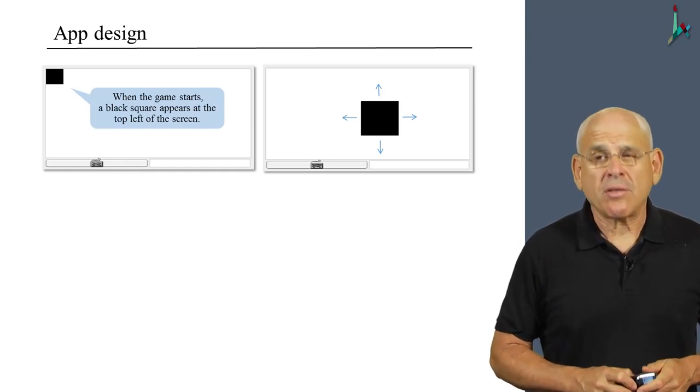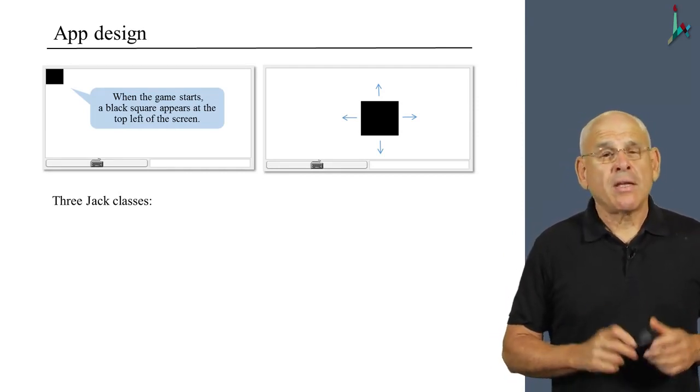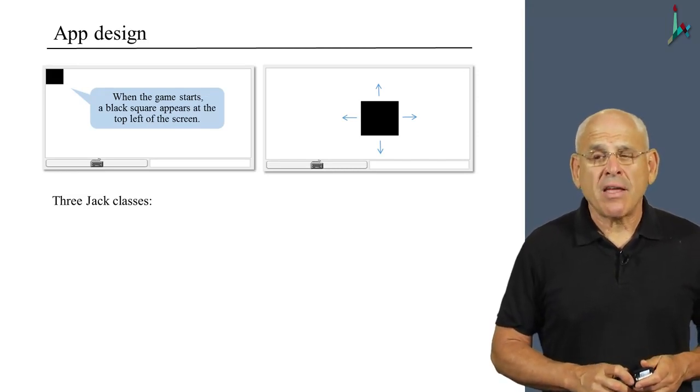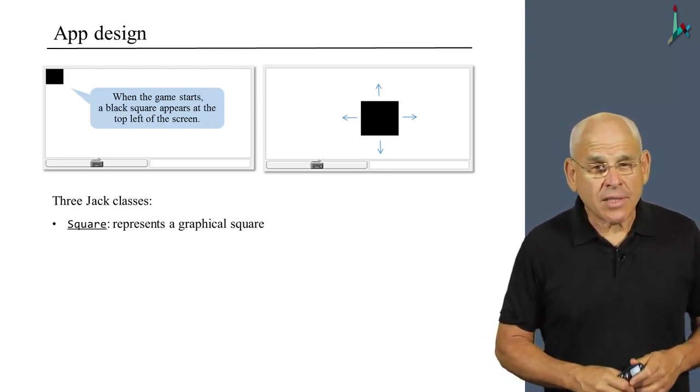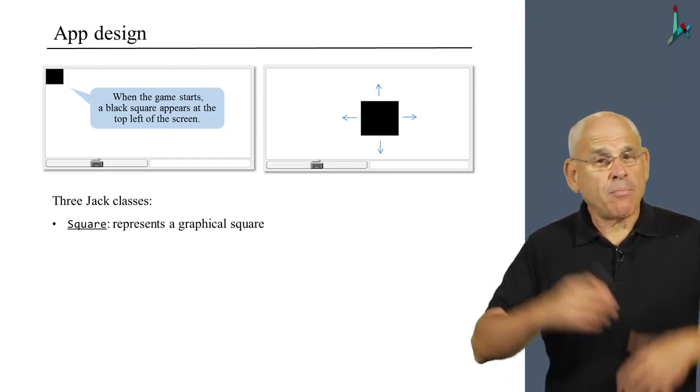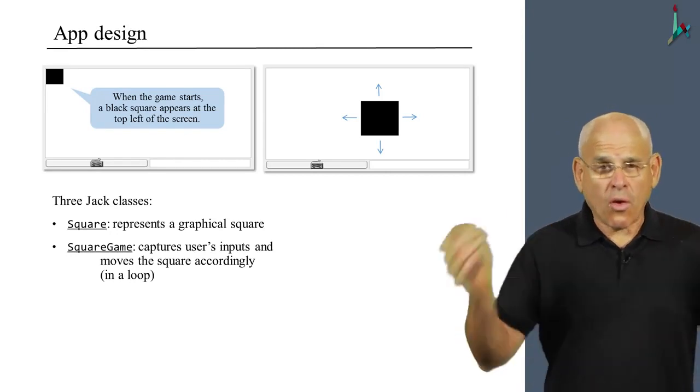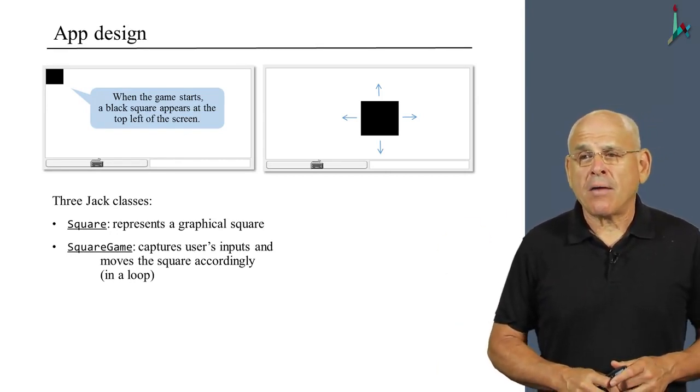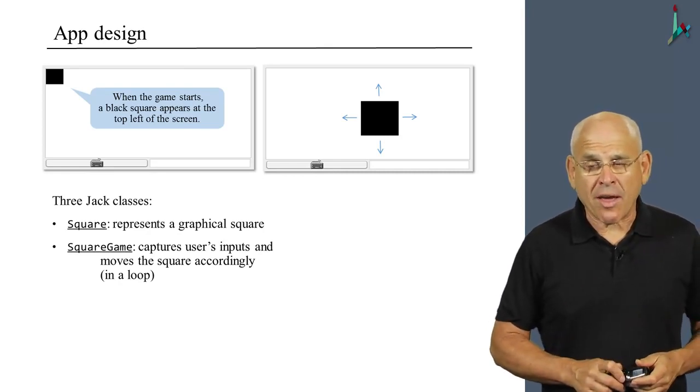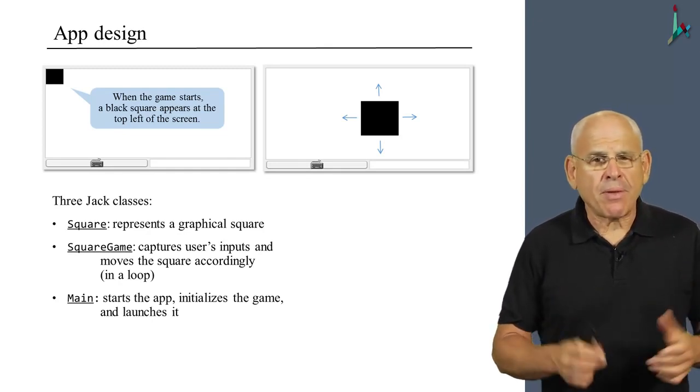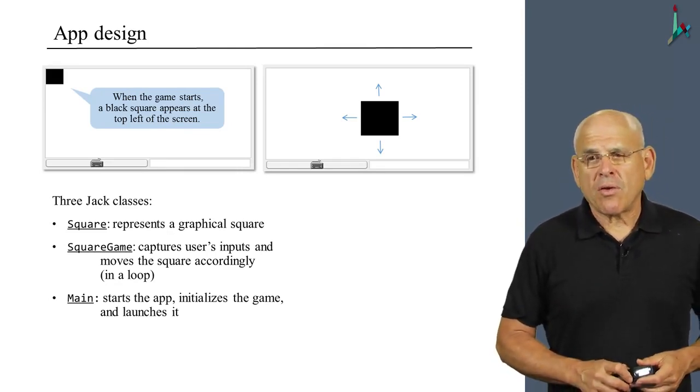What is the architecture of our program? We've decided to structure it around three independent and standalone Jack class files. First, we have a Square class that provides the square abstraction. Using this class, you can create a graphical square and manipulate it and move it around on the screen. Then we have a SquareGame class that controls the user's actions and responds to them by moving the square around, within an ongoing loop. Finally, we have a Main class which is rather simple, that serves to initialize things, set the stage, and get the square game rolling.